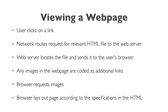When a user goes to look at a web page on their browser, a number of different things happen in order for the user to actually see the web page. The user clicks on a link, or they may enter the URL directly, and the network routes the request for the relevant HTML file to the web server. The web server locates the file and sends it to the user's browser. Any images in the web page are coded as additional links, so the browser may request the images, and then the browser lays out the page according to the specifications in the HTML.